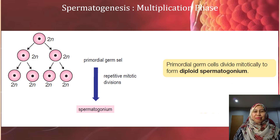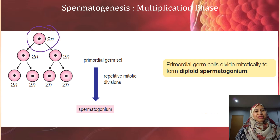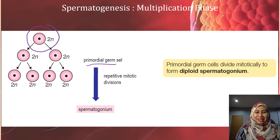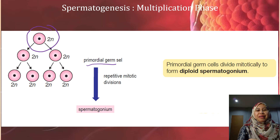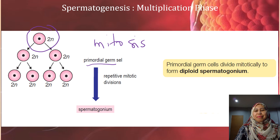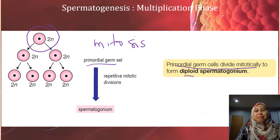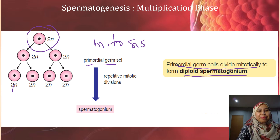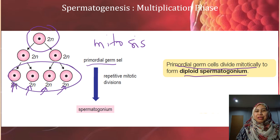We start with the multiplication phase. We begin with the primordial germ cell, or in the Form 5 textbook, the germinal epithelial cell. This primordial germ cell will divide by mitosis to form diploid spermatogonium. The plural form is known as spermatogonia.